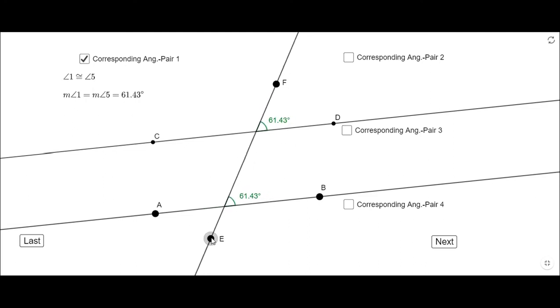Now we have another set, these two, 2 and 6, and they have the same measure. We have a third one, 3 and 7, they have the same measure. And we have a fourth one, 4 and 8, they have the same measure.